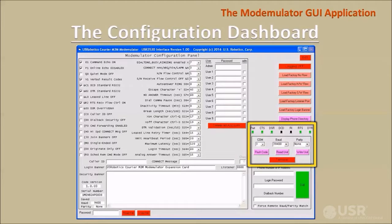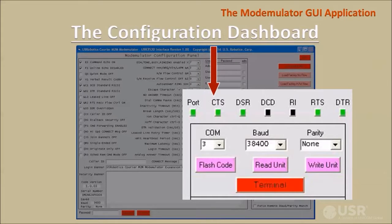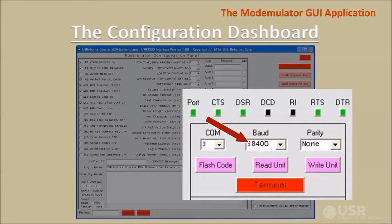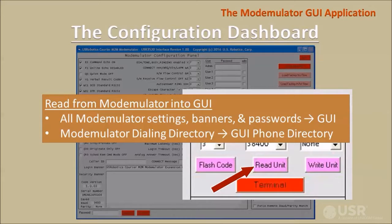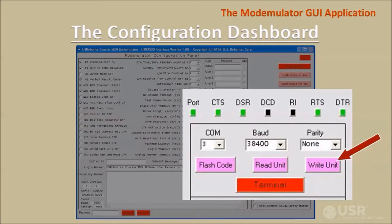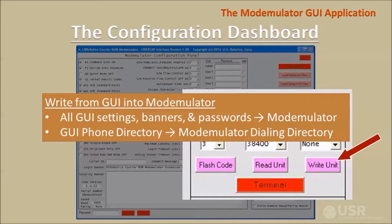The next group of controls contains indicators that show the state of the computer's serial port and RS-232 control signals. There are drop-down lists for selecting the COM port, the baud rate of the computer's serial port, and the type of parity bit. This button executes a read unit operation which reads the modemulator's current settings, banners, passwords, and dialing directory into the GUI for viewing and editing. This button executes a write unit operation which sends the settings, banners, passwords, and phone directory from the GUI into the modemulator.